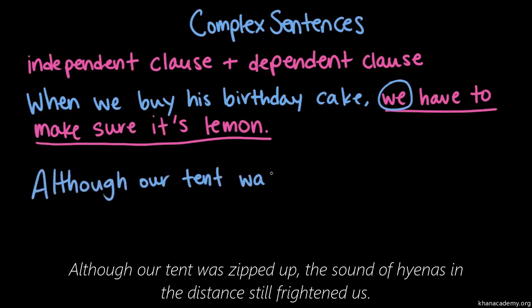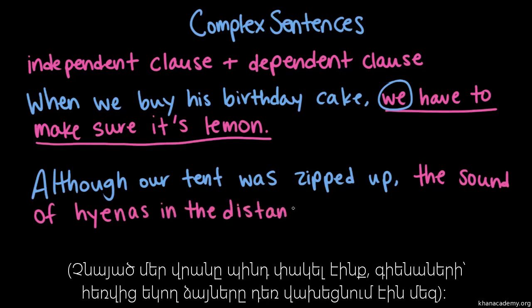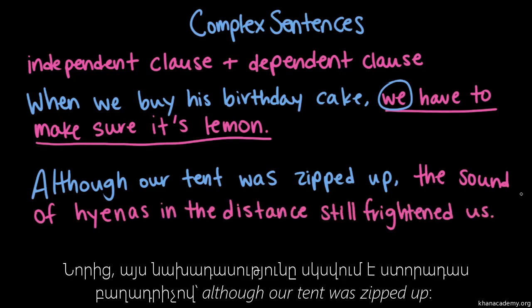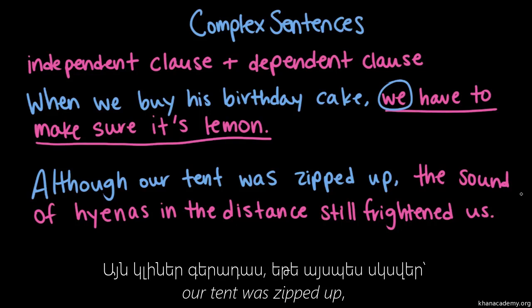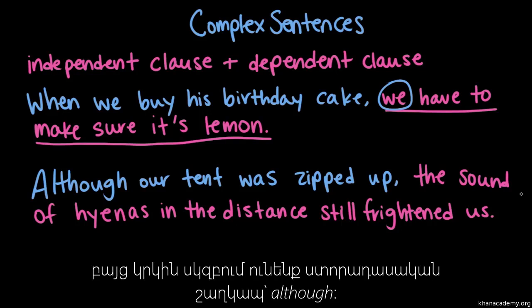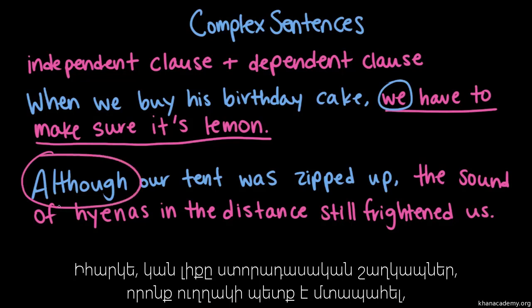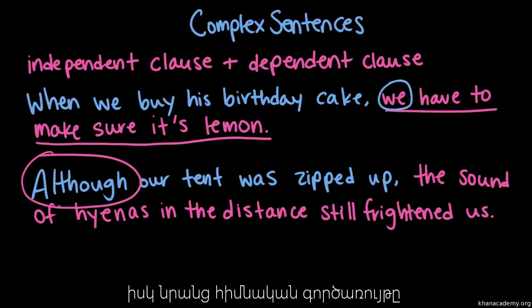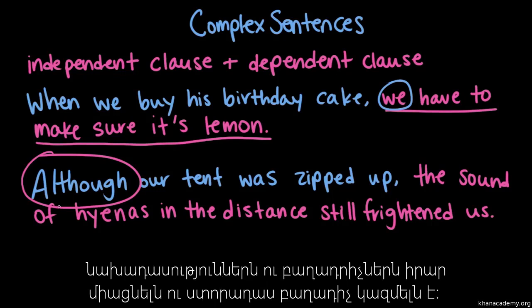Another example of a complex sentence: 'Although our tent was zipped up, the sound of hyenas in the distance still frightened us.' Again, this sentence starts with a dependent clause — 'although our tent was zipped up.' This would be independent if it said 'our tent was zipped up,' but again we have this subordinating conjunction, 'although,' at the beginning. There's a whole bunch of different subordinating conjunctions — they're something you need to remember — but essentially their job is to connect clauses in sentences and also make things into dependent clauses.